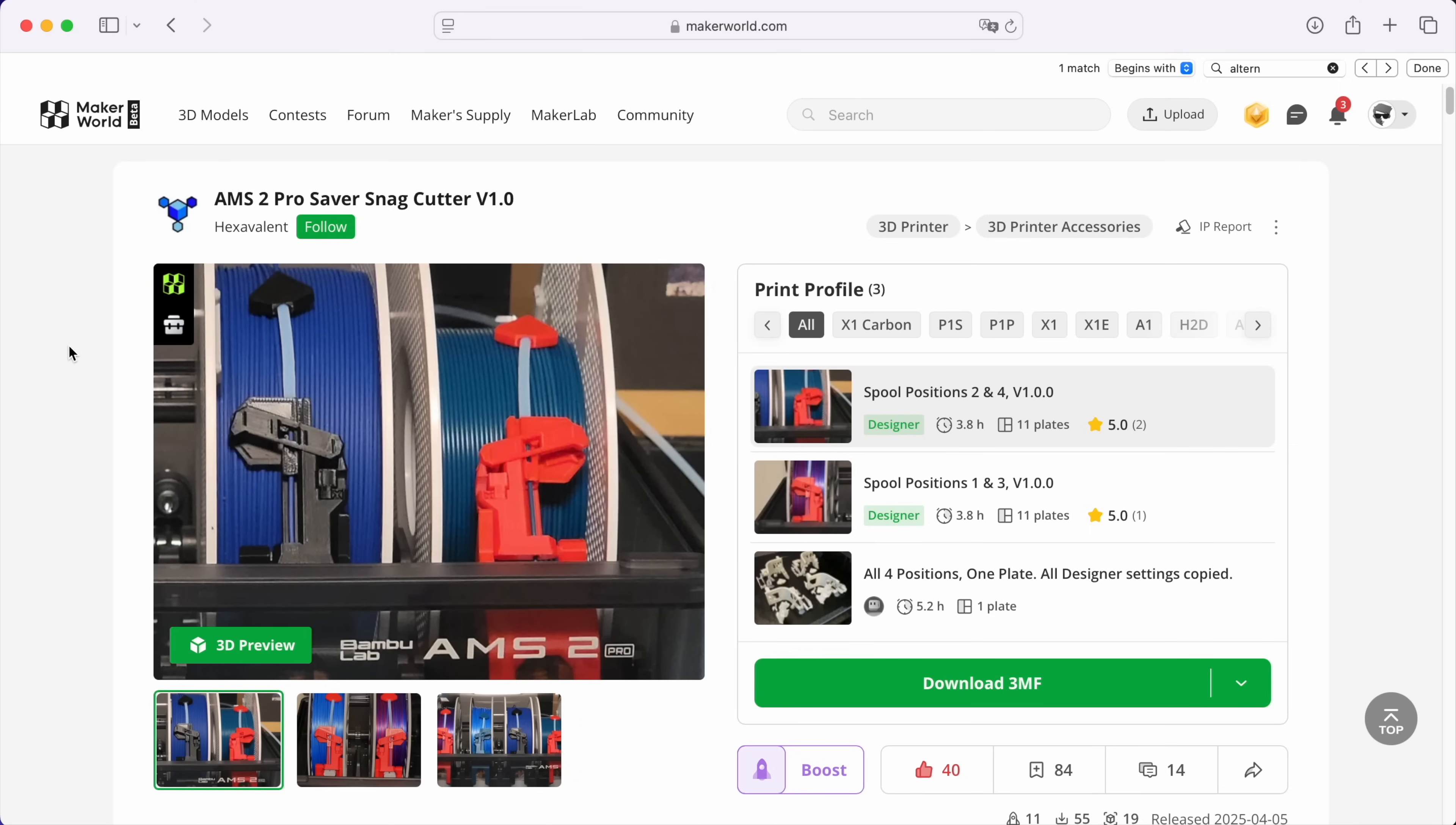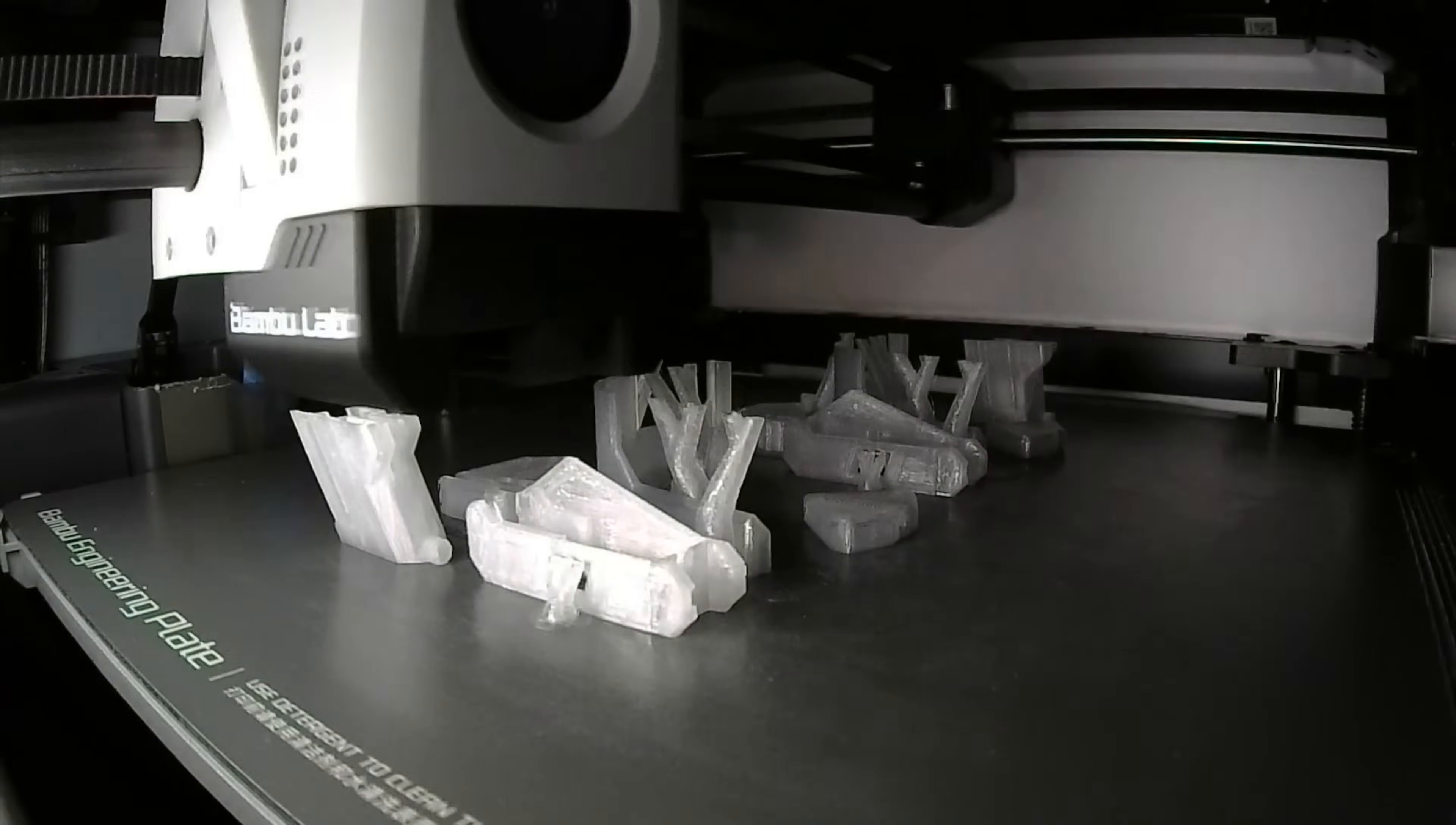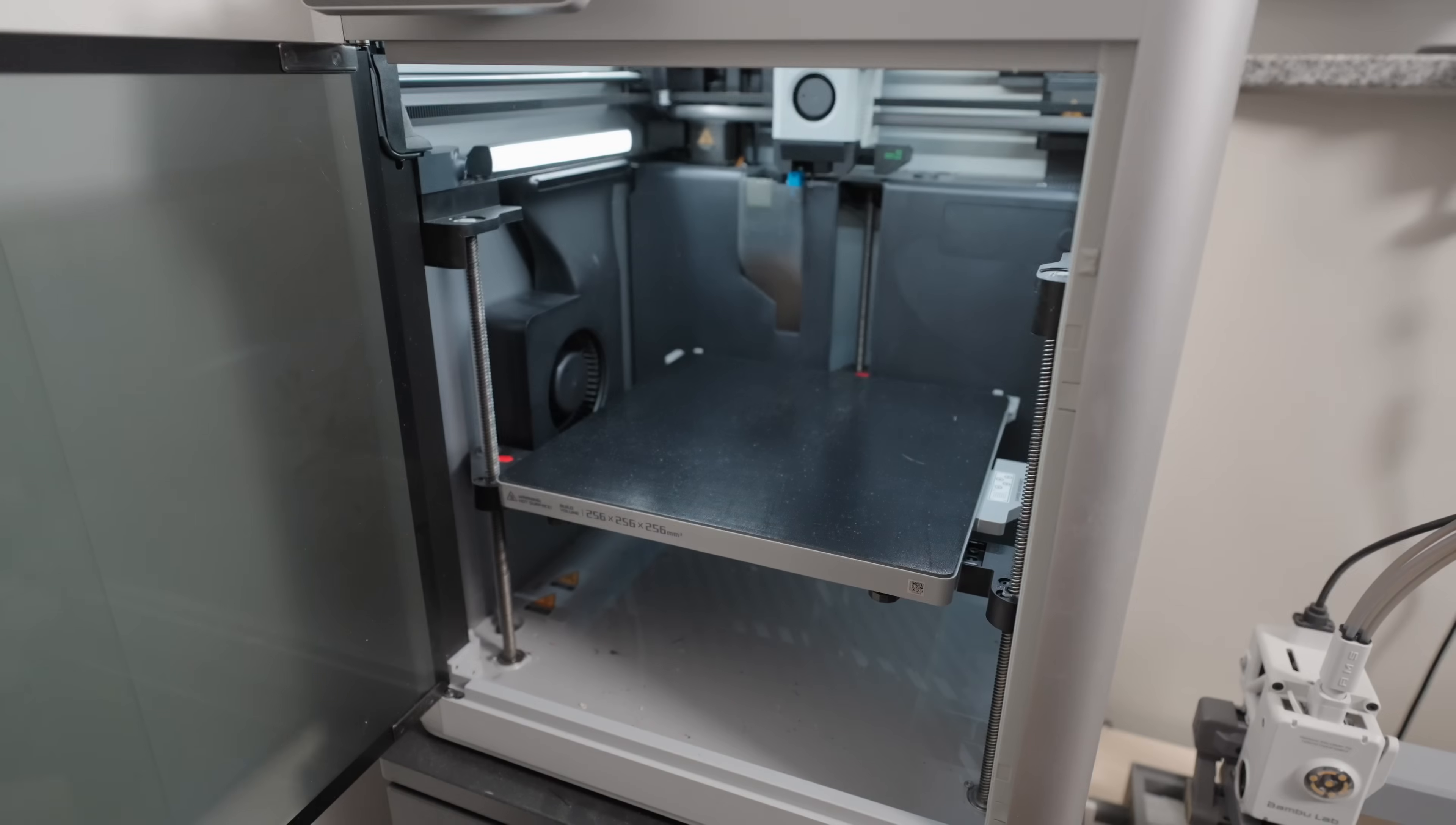Now let's print the AMS2 Pro Saver Snack Cutter designed by Hexavalent. I'm going to use this clear PC to print all 4 units, but you can use any high temperature filaments like PETG, ABS, or ASA. This is important since the internal temperature of the AMS2 Pro can get up to 65 degrees Celsius when you're using the heating function.